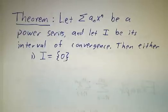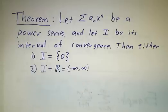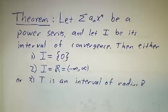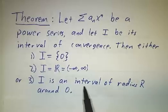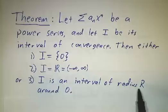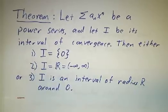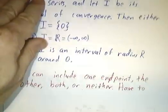So it always converges when x equals 0. And sometimes that's the only place where things converge. There are other series where it converges everywhere. No matter how big x is, it converges. And otherwise, the interval of convergence is an interval, as the name implies, of some radius R. And we call this radius the radius of convergence.